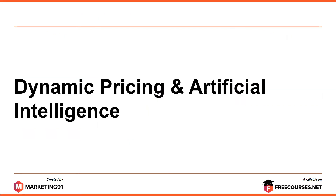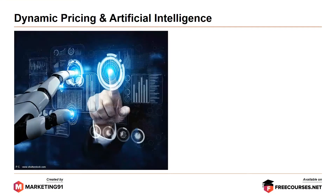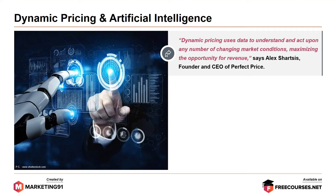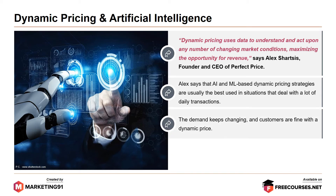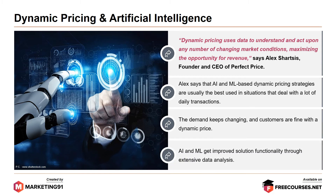Moving on to dynamic pricing and artificial intelligence. Dynamic pricing uses data to understand and act upon any number of changing market conditions, maximizing the opportunity for revenue, says Alex Schatzis, founder and CEO of PerfectPrice. Alex says that AI and machine-based learning dynamic pricing strategies are usually best used in situations that deal with a lot of daily transactions where demand keeps changing and customers are fine with the dynamic price. AI and machine learning improve solution functionality through extensive data analysis.